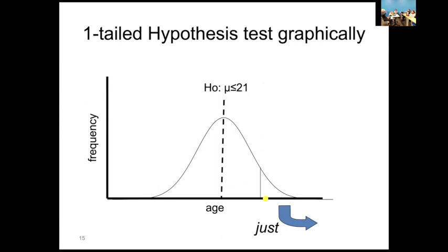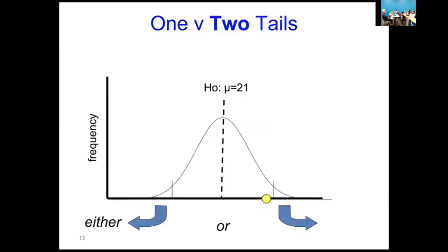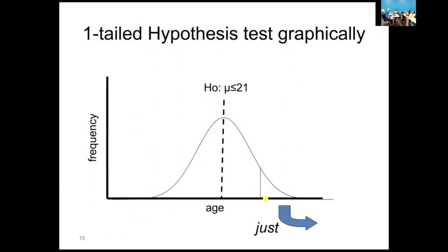With a one-tailed test, all of that 5% of values is stuffed into one side of the null distribution. If your supervisor says 'let's try a one-tailed test because it wasn't quite significant,' that's wrong — the one- versus two-tailed choice is all about the science. In this case, there was something about fourth years — they're 21 or less, there's no way the fourth year population has a mean age of more than 21. It's easier to reject with a one-tailed test because you've got all of that 5% of extreme values in one tail.